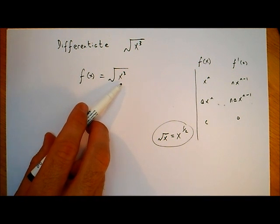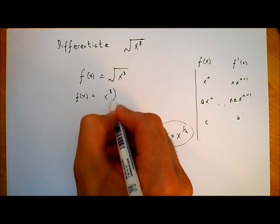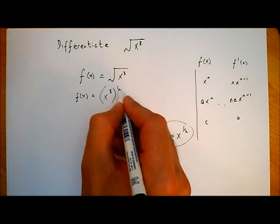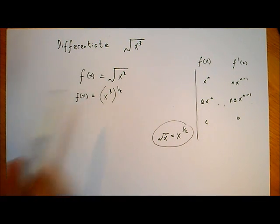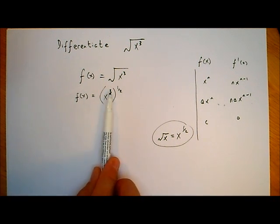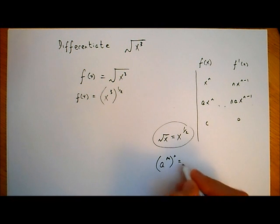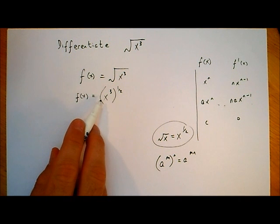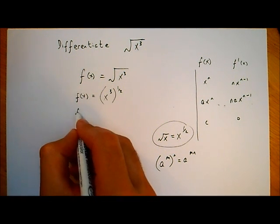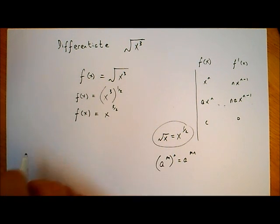So when we have the square root of x cubed, another way to write that would be f of x is equal to x cubed all to the power of a half. Now we can use the rules of indices. The rule says that if I've got a to the power of m, all raised to the power of n, that's the same as a to the power of m times n. So x cubed to the power of a half is the same as x to the power of three over two.